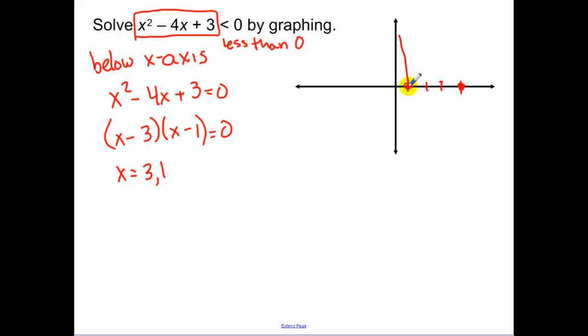So we have zeros of x equals 3 and x equals 1. So our quadratic looks something like that. But I realize I made a mistake there. I had the wrong zero. So 1 and 3. Now you have to look at this and you have to think, okay, I want to know when this function is less than zero, is below the x-axis. We're below the x-axis from 1 to 3.